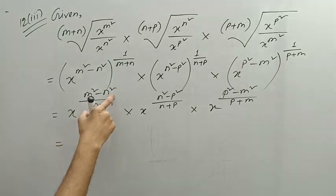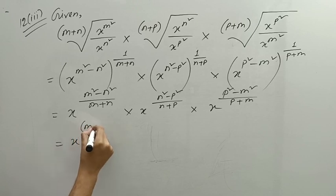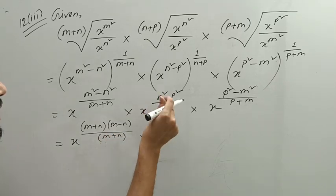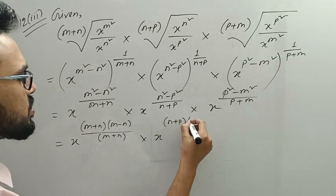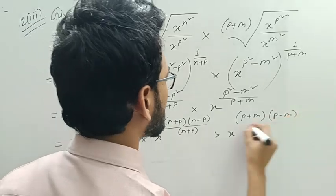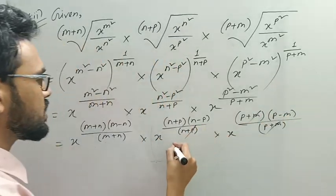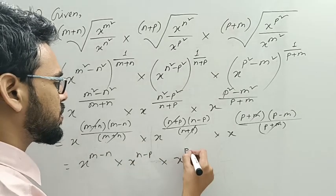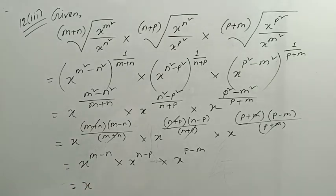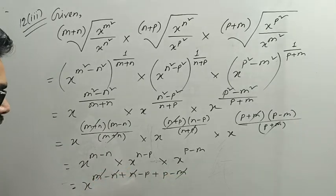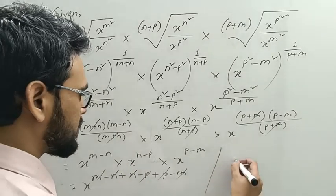Here we use a squared minus b squared. So 2x is equal to a power 1 divided by p plus... equal to a plus b into a minus b, and n plus p cancels. So x to the power m minus n, then n minus p, then p minus n. With x common: power m minus n plus n minus p plus p minus m. All terms cancel to 0, so we have x to the power 0, which equals 1. That is the answer for this indices problem.